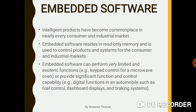Embedded software performs limited and predefined tasks — for example, the microwave oven has limited predefined tasks for which the software is developed and stored in its memory. It is also useful for the functioning and controlling of the product, such as digital functions in automobiles like fuel control, dashboard display, and the braking system. The functionality is very limited. The task of this type of software is to make the product intelligent and easy for users, and it is embedded into read-only memory to control that particular product.